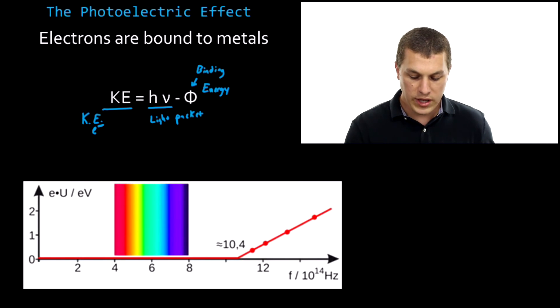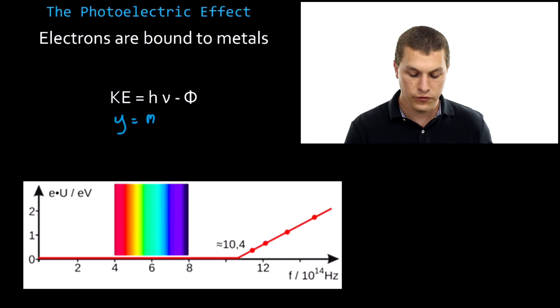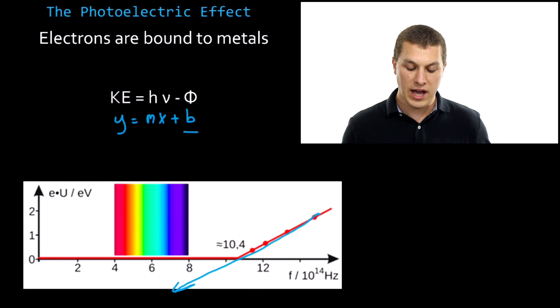Now, interestingly, we can think about this as a y equals mx plus b equation. If we think about the kinetic energy as being y, and the slope being m for Planck's constant, and x being our frequency, and then the binding energy would be our y-intercept. That tells us that if we fit this line here, our y-intercept, this b, will actually tell us the binding energy. So if we look at a plot carefully, we can actually tell what metal is there by looking at that y-intercept. Why is that? Well, different metals hold onto their electrons with different strengths.